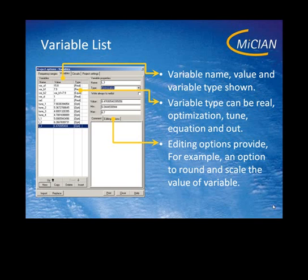On the right side, for example, you can see one of those optimized variables — it contains L_3. Here you have the name, here you see the type of the variable which you can set via the combo box, and here you see the current value and the min and max values. You can also set a comment for each variable describing what that variable is for.